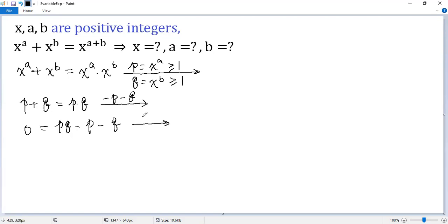Then both sides add 1. So we get 1 equals pq minus p minus q plus 1. Next, we factor the right side.